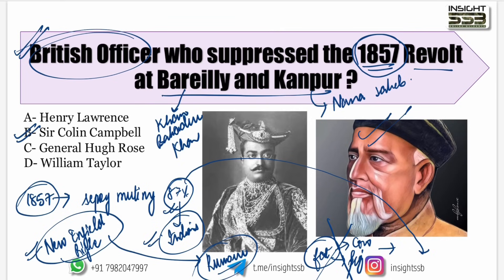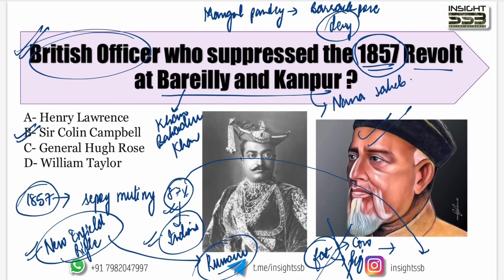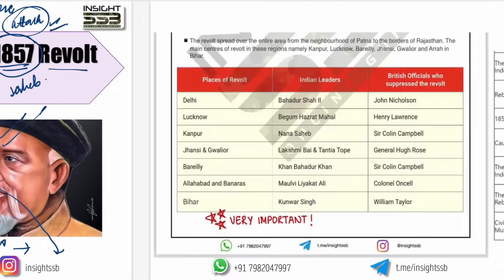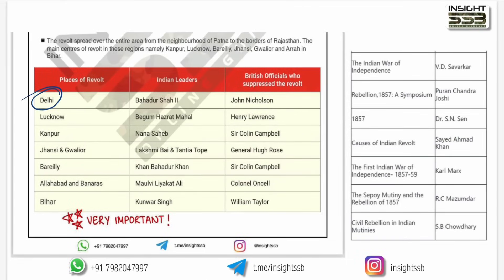At that time, the famous leader Mangal Pandey was at Barrackpore. He was forced to use the cartridge but he clearly refused and even attacked a British officer. Within a month he was executed. After this, revolts started everywhere — in Meerut and across multiple places.